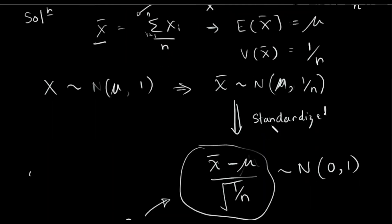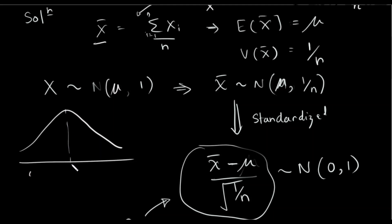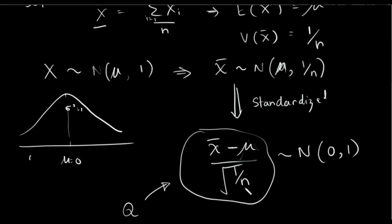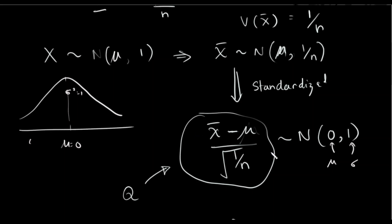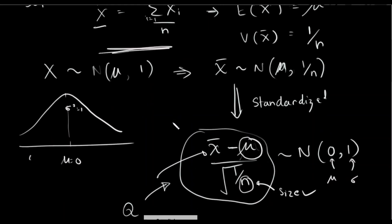Now, if we want to standardize x-bar, we can use the standard normal distribution table. Standardizing gives us a statistic with mean 0 and standard deviation 1, using the square root of 1 over n (i.e., sigma over root n). We can see the distribution values in the standard normal table and identify the value of mu.